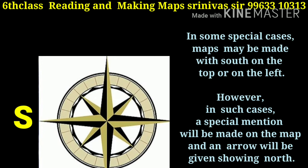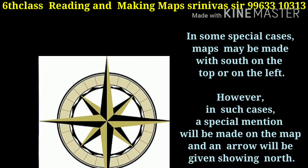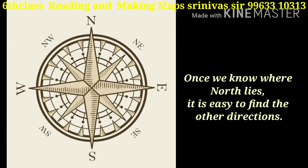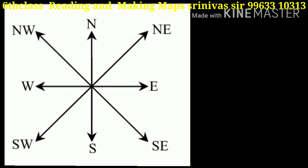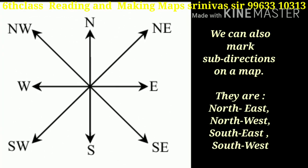In some special cases, maps may be made with south on the top or on the left. However, in such cases a special mention will be made on the map and an arrow will be given showing north. Once we know where north lies, it is easy to find the other directions. We can also mark sub-directions on a map.